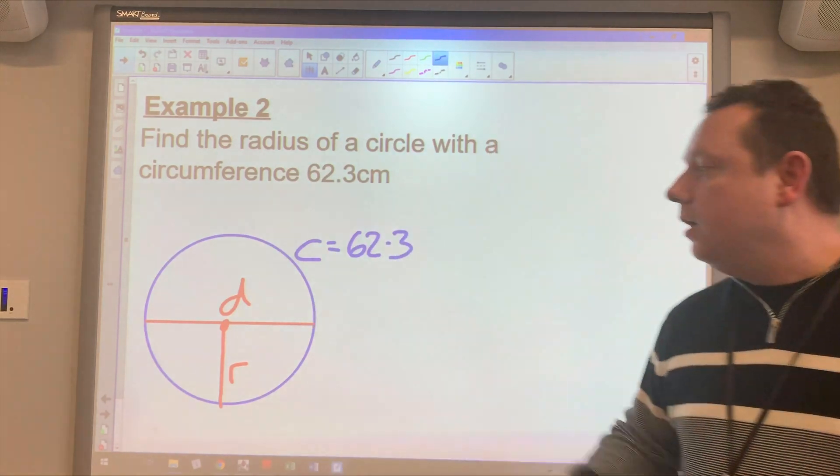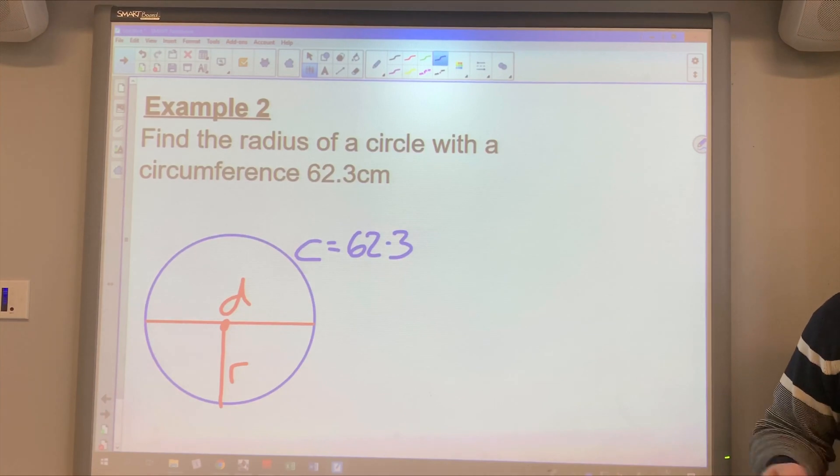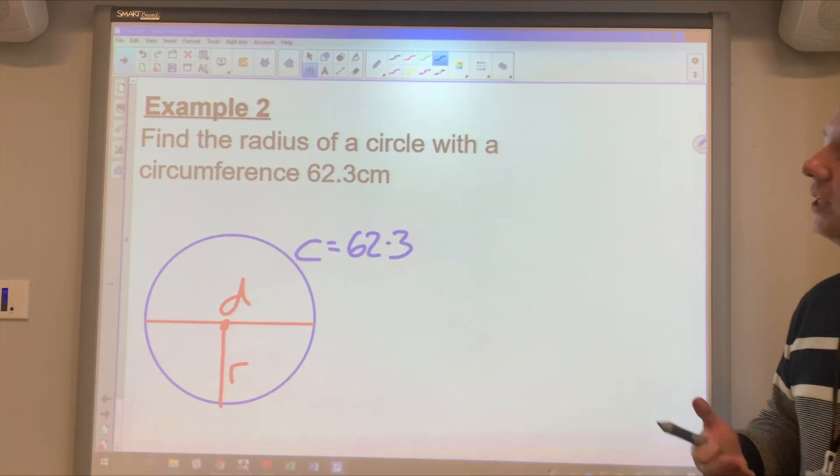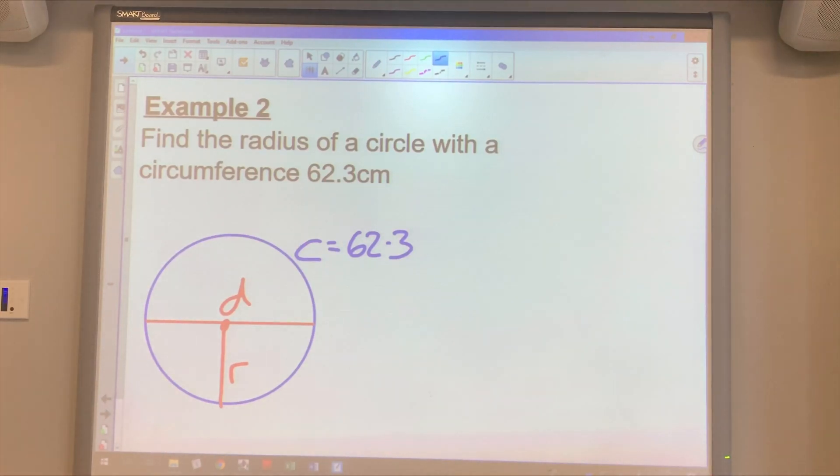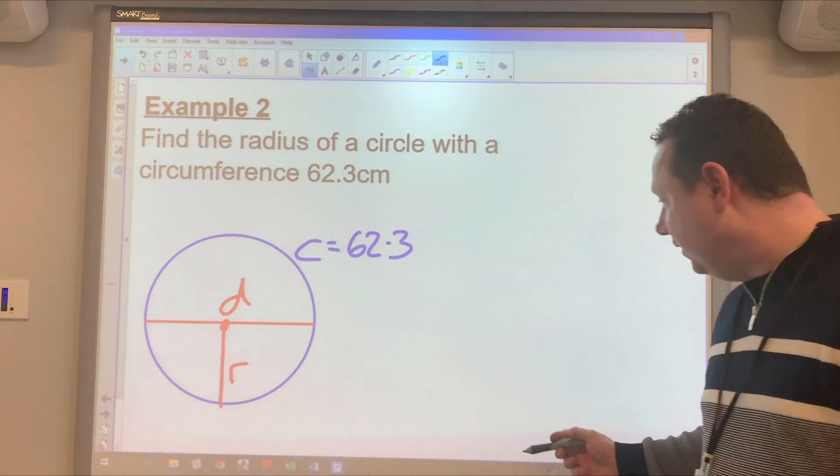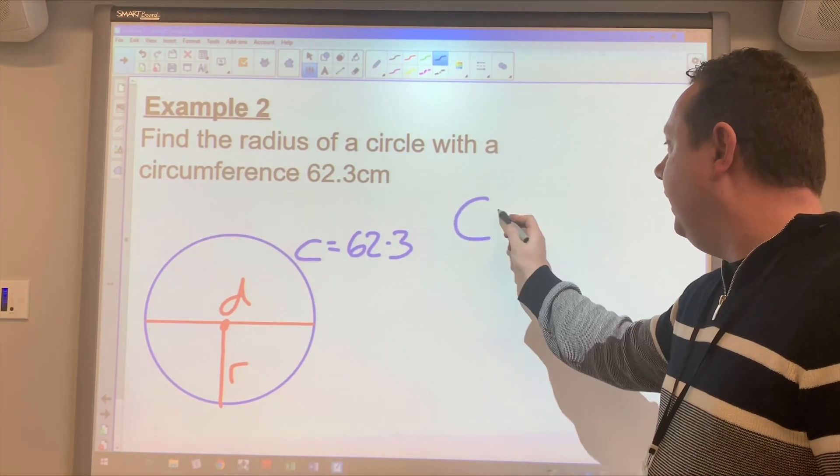Now we know from previous lessons, or it should be obvious actually, that the radius is just half the diameter. So if I find the diameter, all I need to do is half the diameter and that will give me my radius. So I start off exactly the same way. C equals pi D.